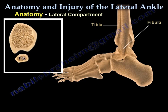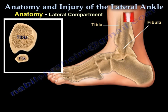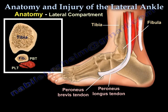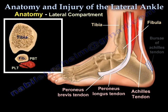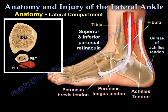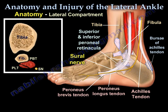Within the lateral compartment of the ankle, you can see the peroneus brevis tendon, the peroneus longus tendon, and the Achilles tendon. There are two bursae located near the insertion of the Achilles tendon into the calcaneus. The superior and inferior retinaculum are two bands that support the tendons of the peroneus longus and brevis muscles. The sural nerve passes along the lateral ankle.